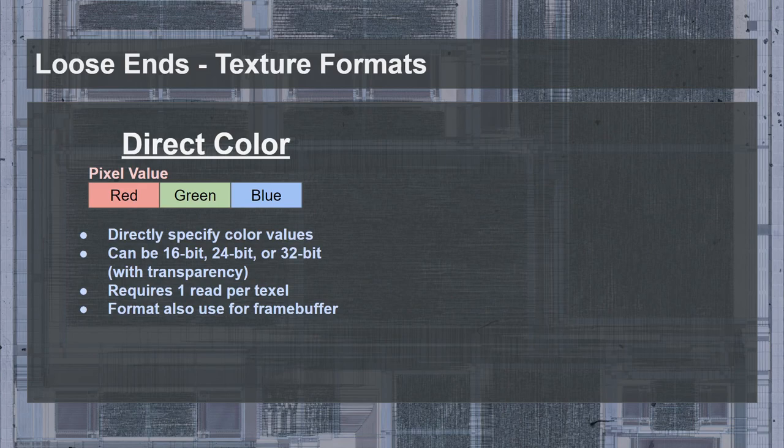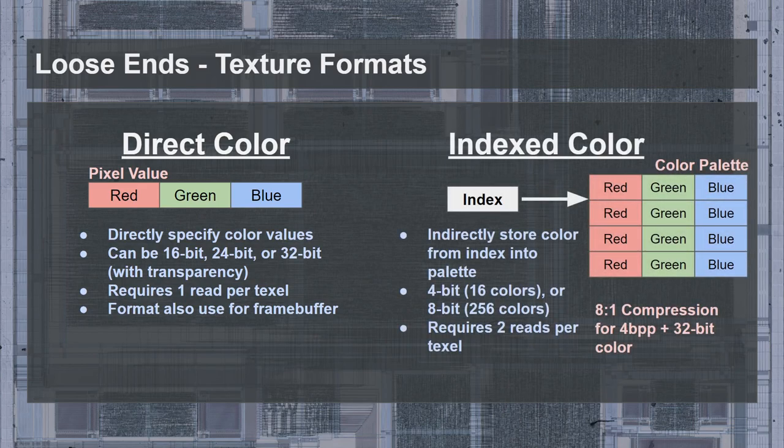Another method is to use indirect, or indexed color. In this case, only an index is stored in the texture memory, which points to a color specified in a color palette table. The most common forms use a 4-bit index for 16 colors, or an 8-bit index for 256 colors. This method provides a decent rate of color compression — up to 8 times with a 4-bit index. The downside is that it limits the possible colors for the texture, and every texel fetch requires two reads: one for the index, and one for the corresponding color from the palette table. For a GPU to support indexed color, it must have a way to perform these two sequential reads for each texel fetch.